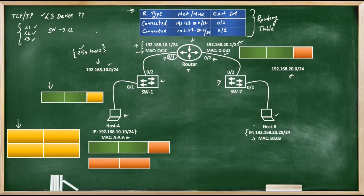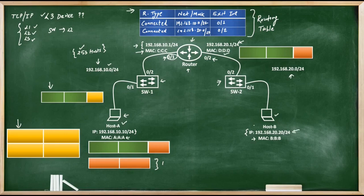Now let's do a Layer 3 packet walk. Host A initiates a ping towards Host B. Host A first checks whether Host B is in its own network by looking at the network mask configuration. It finds that Host B is in a different network. Because the destination is not in the same subnet, Host A cannot send the request directly to Host B.